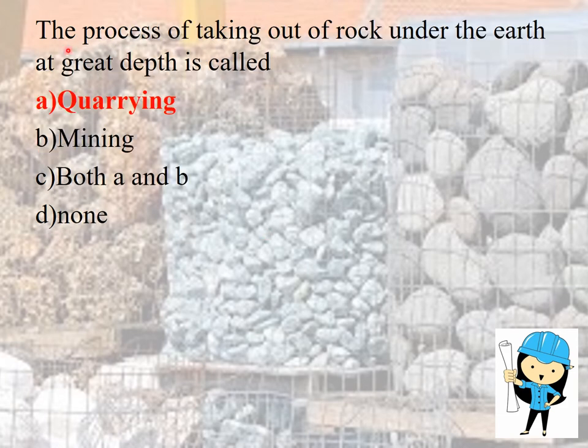The next question is about quarrying. The process of taking out rock from under the earth at greater depth is called quarrying. Quarrying is defined as the act of extracting stones from natural rock beds for engineering purposes. Before choosing a quarrying site, we should consider: first, the quantity and quality of available stones; second, the distance of the quarry from roads, dry base and sea coast.